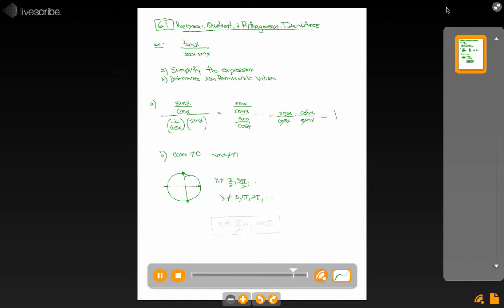If we're going to state all the non-permissible values, the fastest way to do so would be to say, well, 0, pi over 2, pi, 3 pi over 2, 2 pi, every 90 degrees, or every pi over 2 radians, I have another non-permissible value. So if you just say pi over 2 times n where n is an integer, you would be stating all the non-permissible values at once for this particular identity.